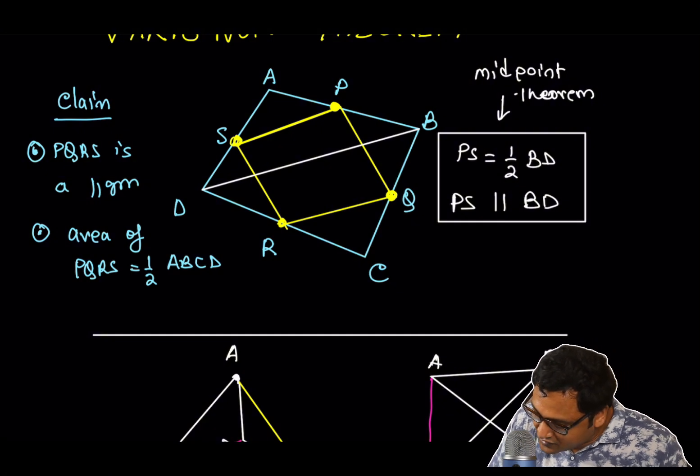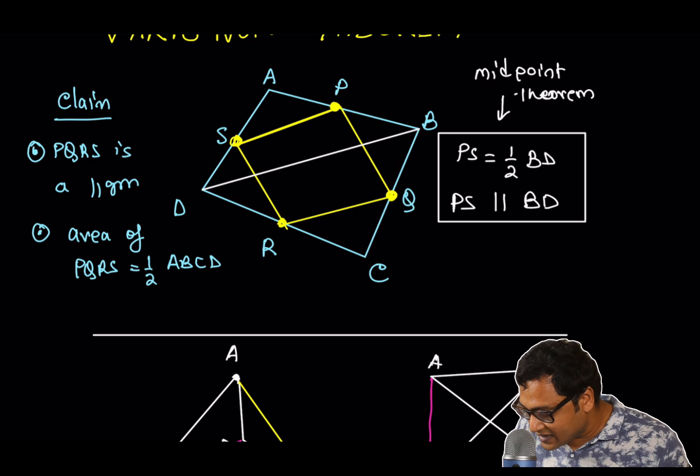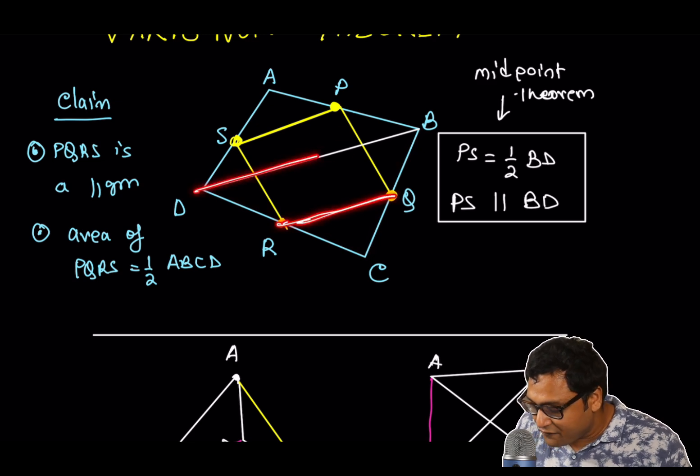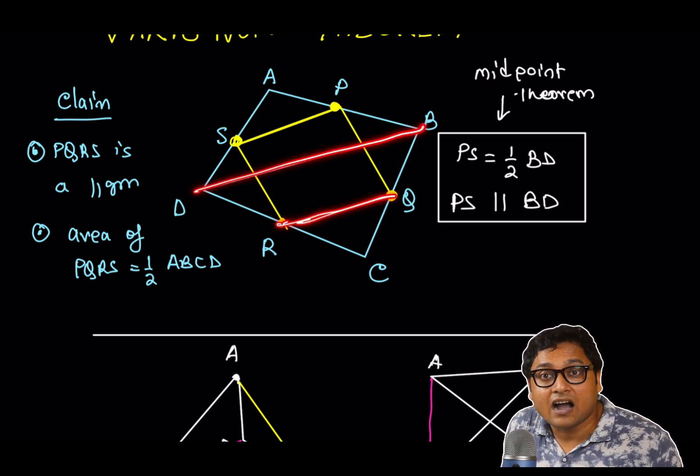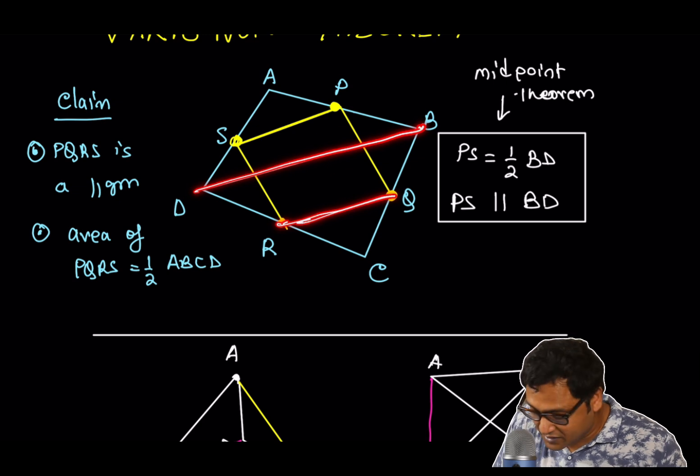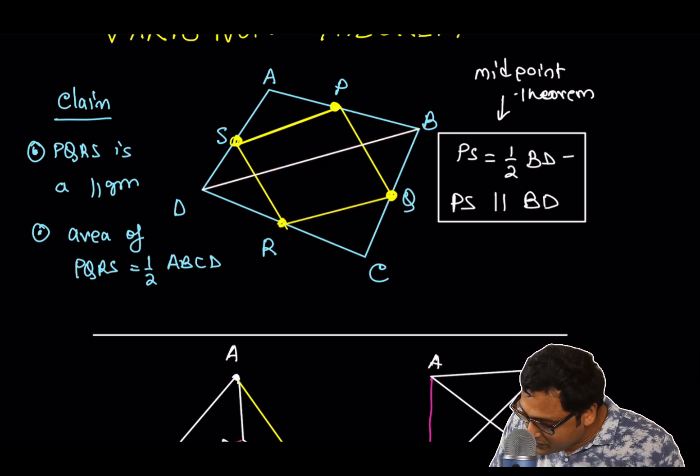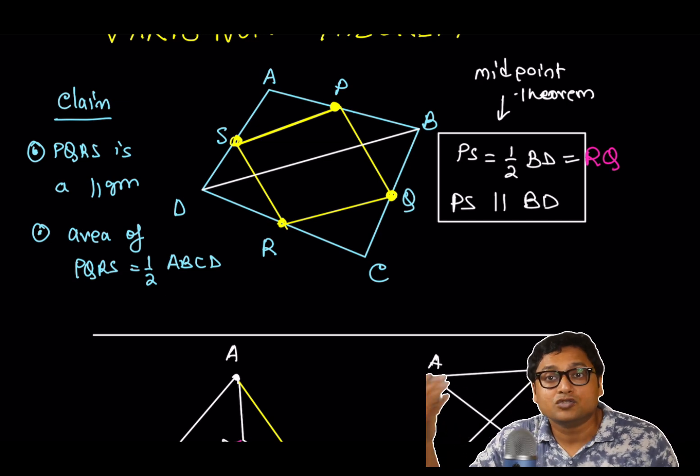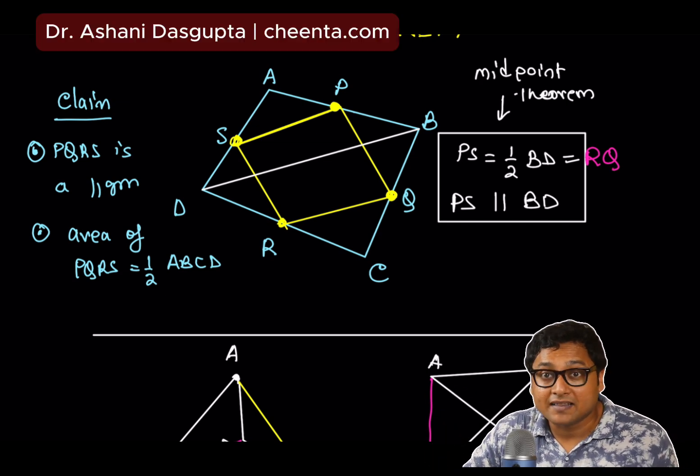Similarly, we can use the triangle BCD to notice RQ is half of BD, and RQ is parallel to BD. So, therefore, PS is equal to RQ, and PS is parallel to RQ, because both of them are parallel to BD.